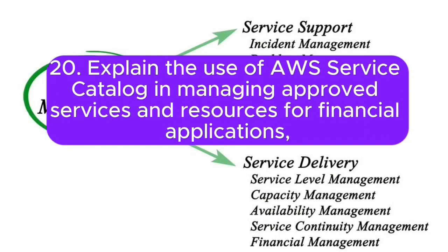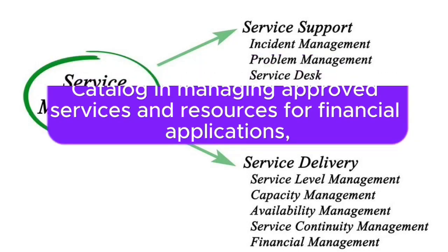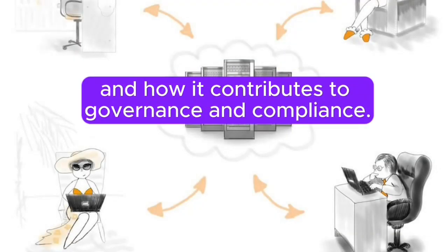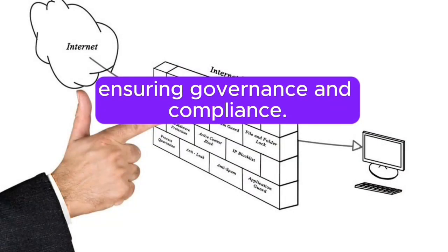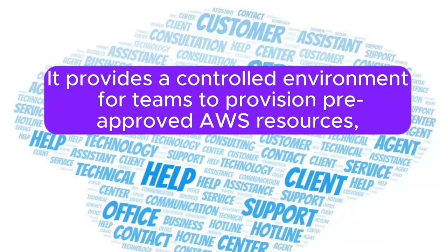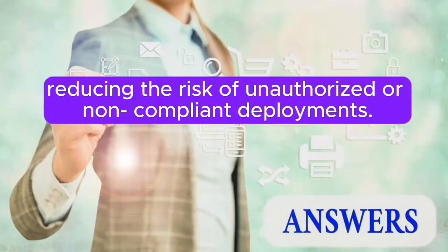Question 20: Explain the use of AWS Service Catalog in managing approved services and resources for financial applications, and how it contributes to governance and compliance. Answer: AWS Service Catalog manages approved services and resources for financial applications, ensuring governance and compliance. It provides a controlled environment for teams to provision pre-approved AWS resources, reducing the risk of unauthorized or non-compliant deployments.